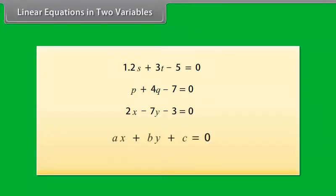So, any equation which can be put in the form AX plus BY plus C is equal to 0, where A, B and C are the real numbers and A and B are not both 0, is called a linear equation in two variables.